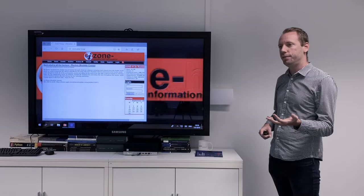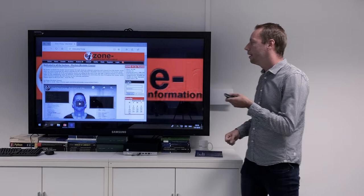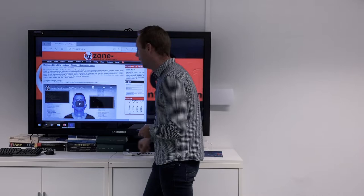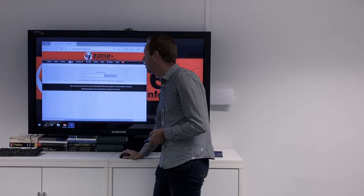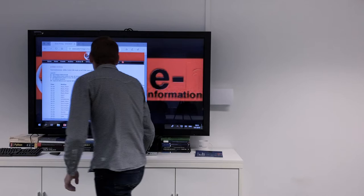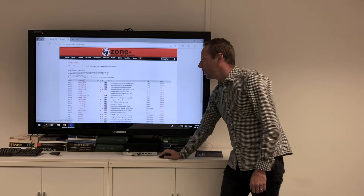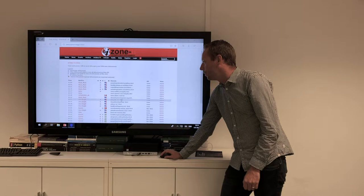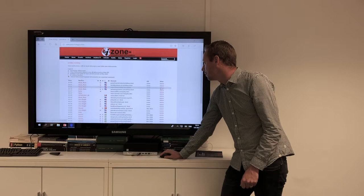I'm going to use data from the ZoneH website. ZoneH is an archive for all defacements of websites that are defaced. When a website gets defaced, a hacker gets into the website and changes the content, puts a picture or video or text on the website. If they want, hackers can report their defacement to ZoneH. Then it gets into this archive. Here you can see the notifier, basically the one who reports the defacement to the website. Here you see the websites that are defaced.